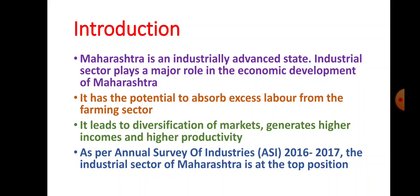The industrial sector has the potential to absorb excess labor from the farming sector. Farming is a seasonal business, so farmers work only for 4 to 5 months and the rest of the year they remain unemployed, facing the problem of seasonal unemployment. They migrate from rural areas to urban areas in search of job opportunities. The industrial sector in Maharashtra has the potential to absorb this surplus labor.